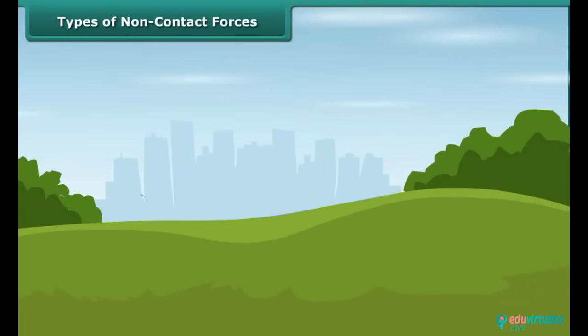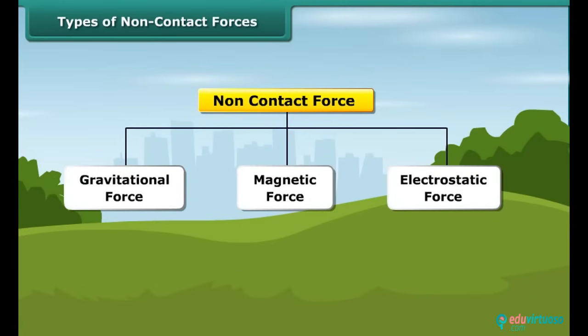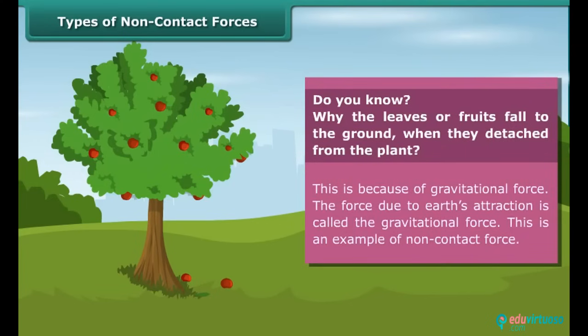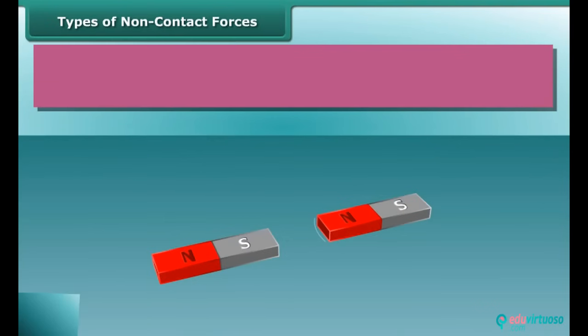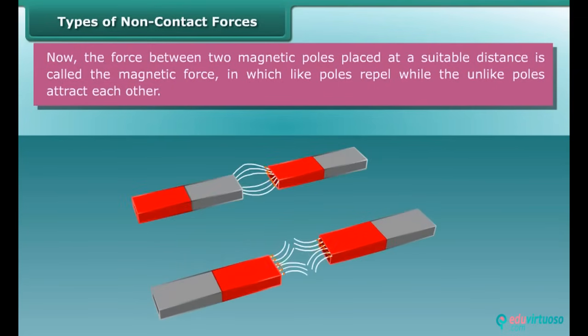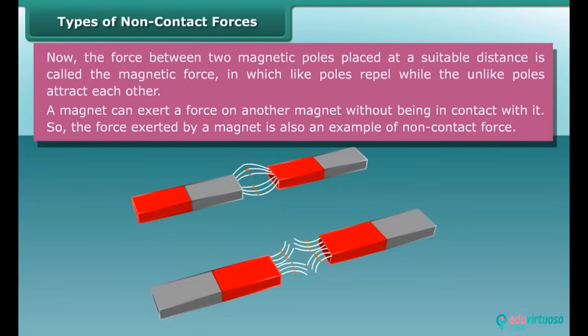Types of non-contact forces. The types of non-contact forces are gravitational force, magnetic force, and electrostatic force. Do you know why the leaves or fruits fall to the ground when they're detached from the plant? This is because of gravitational force. The force due to Earth's attraction is called the gravitational force. This is an example of non-contact force. Now the force between two magnetic poles placed at a suitable distance is called the magnetic force, in which like poles repel while the unlike poles attract each other. A magnet can exert a force on another magnet without being in contact with it. So the force exerted by a magnet is also an example of non-contact force.